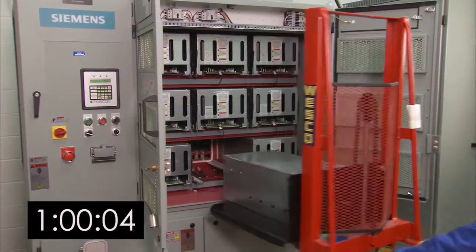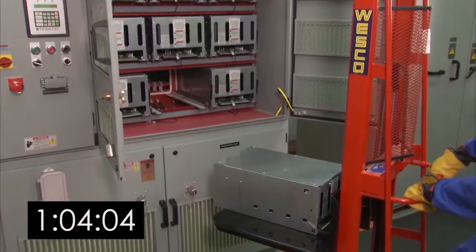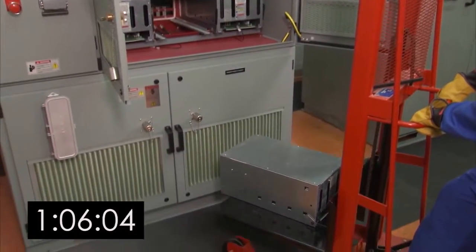Pull the cell lifter away from the cabinet and lower it to prevent it from becoming too top-heavy. Then move the power cell to a pallet or storage device.